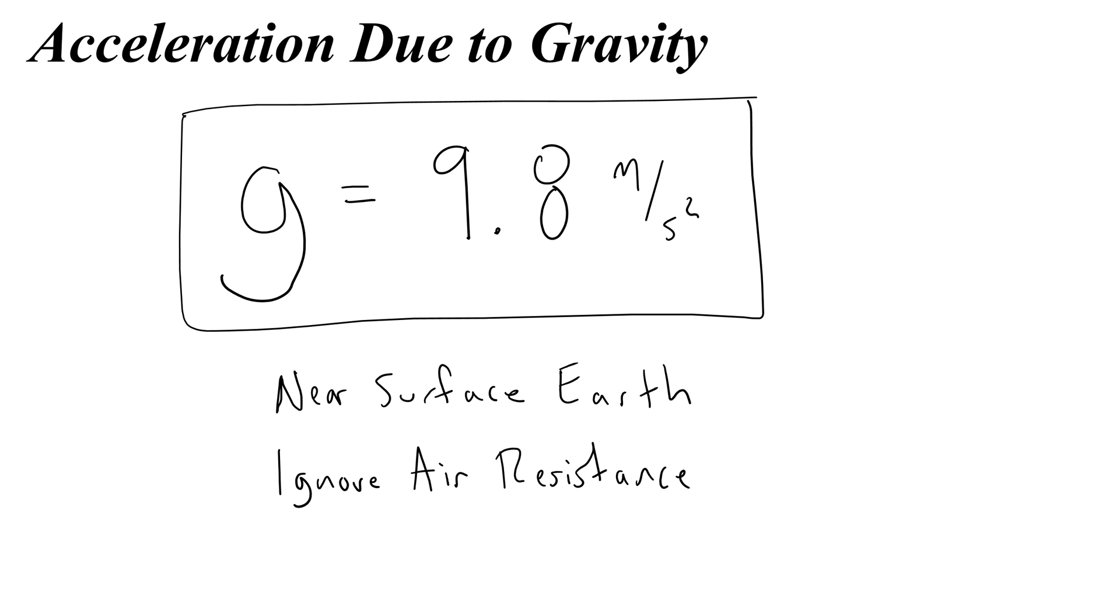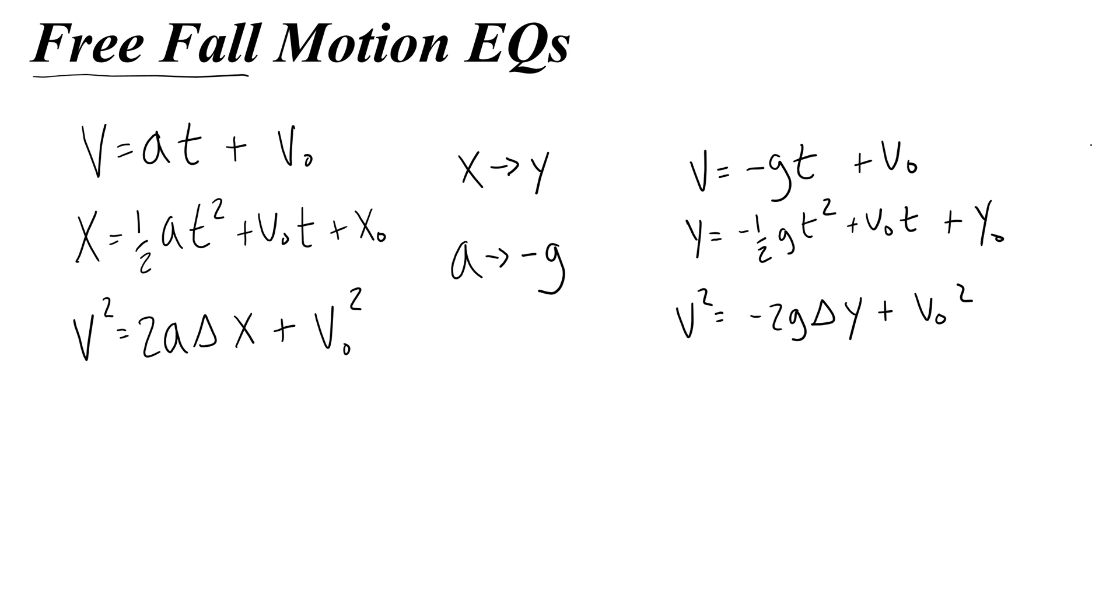Now this is an acceleration, so for our motion equations we can replace any of our regular motion equations with accelerations in them with a negative g for the acceleration so that we get sort of a free-fall motion equation. And we can also replace x's with y's because y is much better for vertical motion. So these are three equations that we can use for free-fall motion with negative g put in for a and y put in for x.